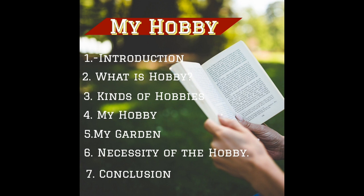The outline for 'My Hobby' includes these points: first, Introduction; second, What is Hobby; third, Kinds of Hobbies; fourth, My Hobby; fifth, My Garden; sixth, Necessity of the Hobby; and finally, Conclusion.